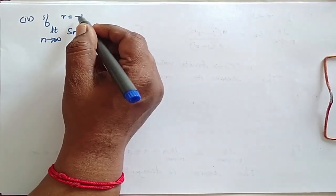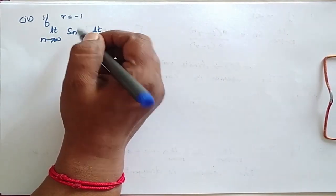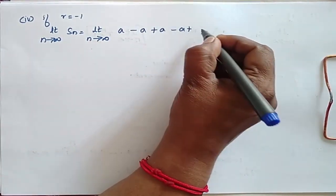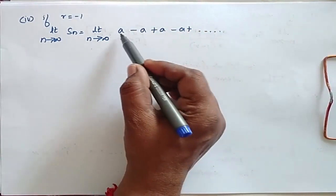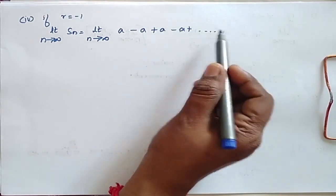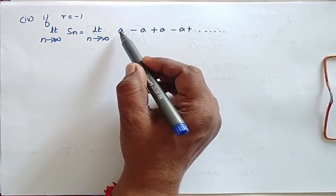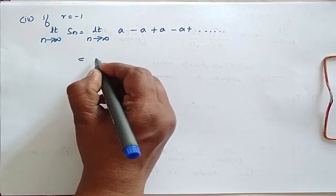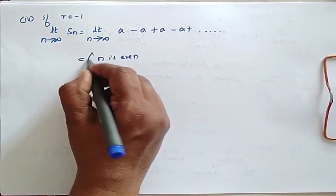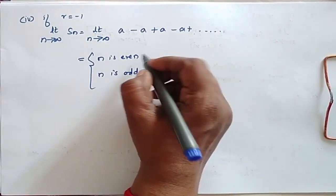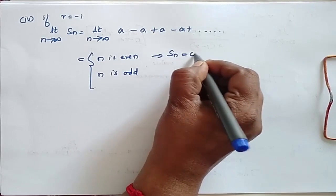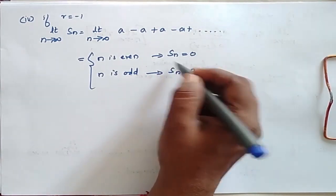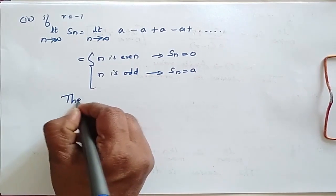When r equals -1, the series becomes a - a + a - a + ... When the series has an even number of terms, the sum is 0. When it has an odd number of terms, the sum is a. So we have two possibilities: when n is even, the sum equals 0; when n is odd, the sum equals a. It does not tend to a unique limit, so the series is oscillatory.